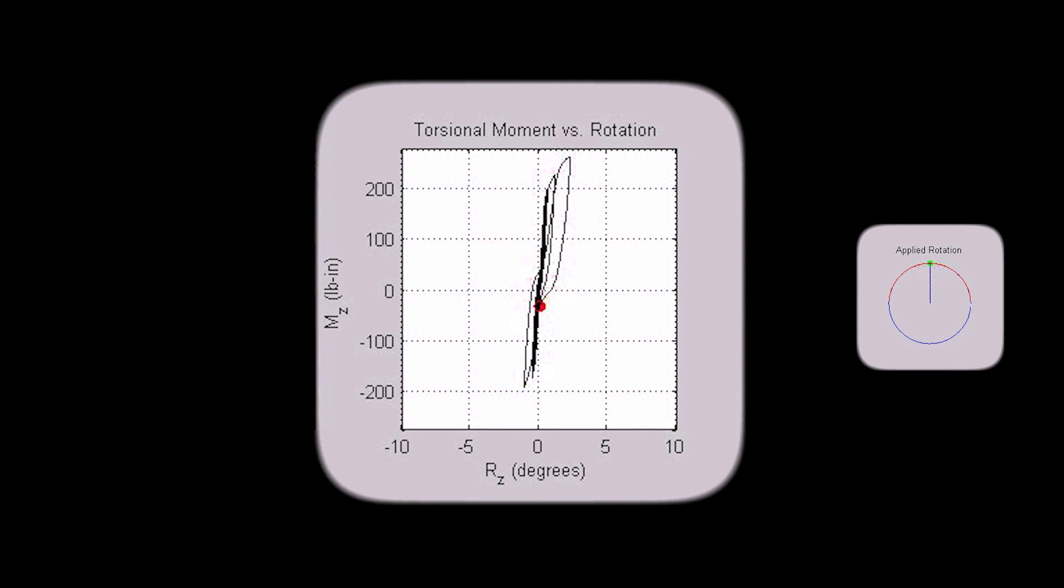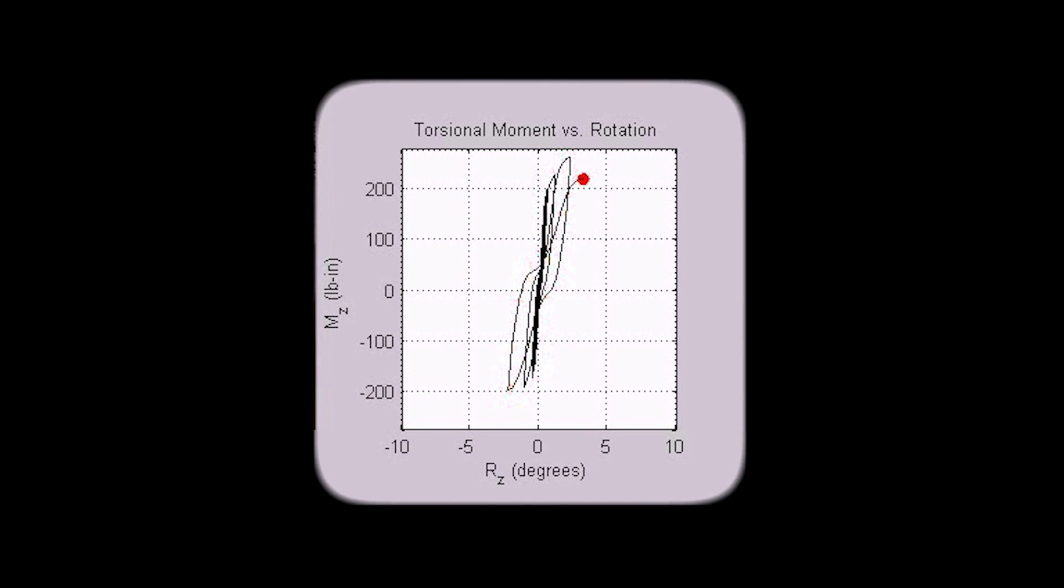This indicates that increased levels of torsion are resisted when more rotation is applied to the specimen, but that as the rotation reverses and returns to its initial position, the torsional resistance drops at a faster rate than it increased.